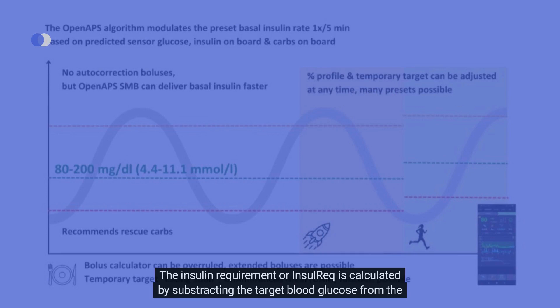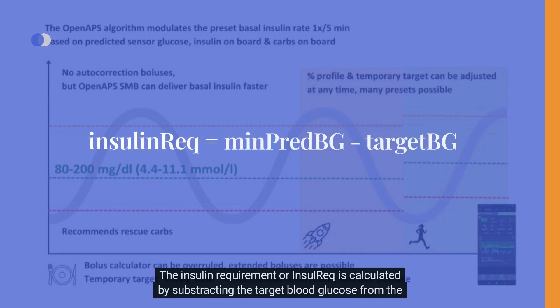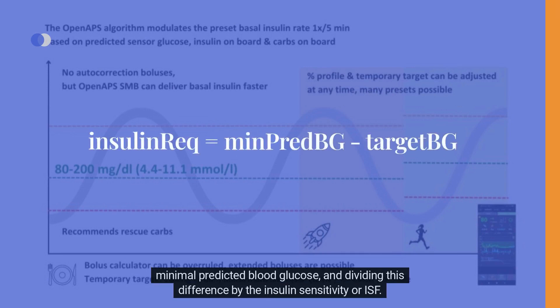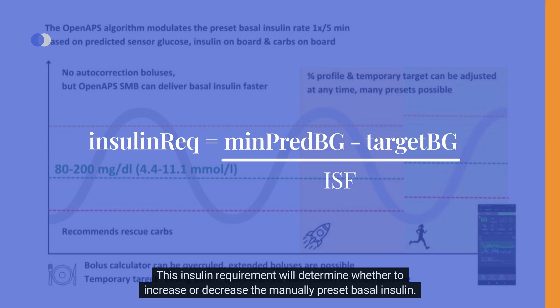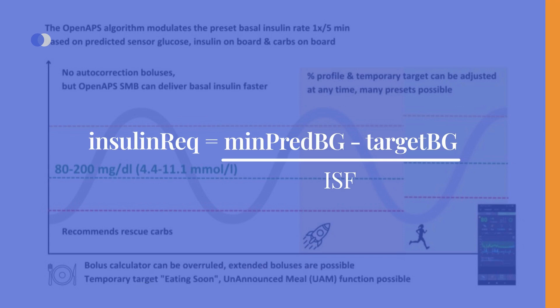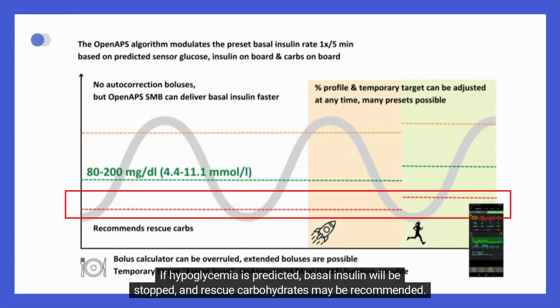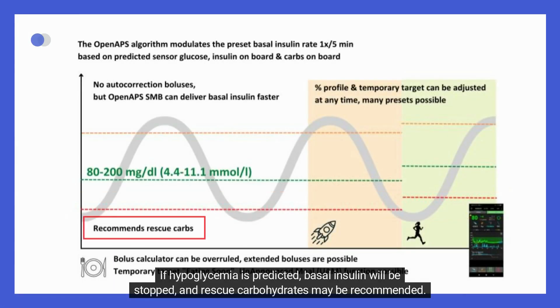The insulin requirement, or INSULREC, is calculated by subtracting the target blood glucose from the minimal predicted blood glucose and dividing this difference by the insulin sensitivity, or ISF. This insulin requirement determines whether to increase or decrease the manually preset basal insulin. If hypoglycemia is predicted, basal insulin will be stopped and rescue carbohydrates may be recommended.